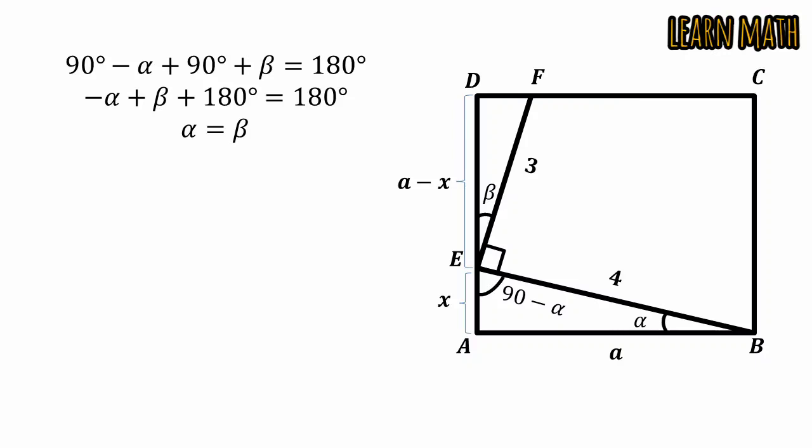So in these two triangles, triangle BAE and triangle EDF, two angles are same, alpha and beta. Both are right angle triangles so the third angle will be also same and these two triangles are similar.